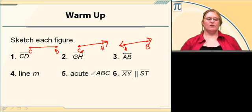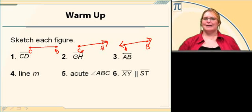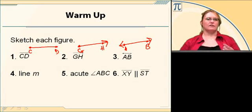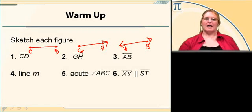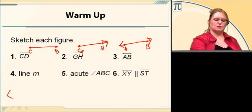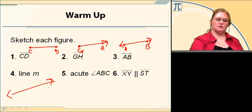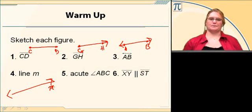Number four says line M. Notice we only have one letter this time. That's because M is not a point — M is just the name of the line. So I'm going to draw a line, and then next to it, try to do a cursive lowercase M.